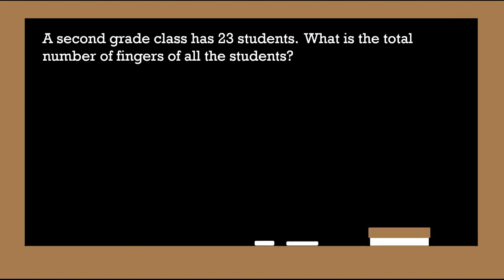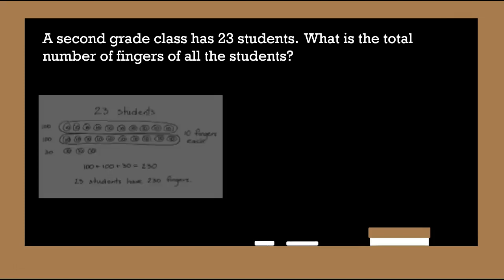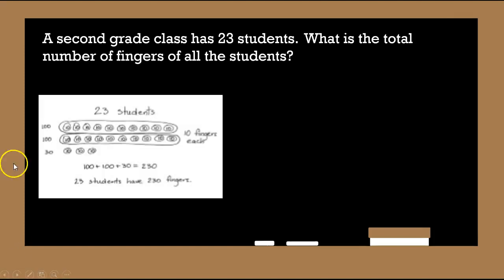Okay, so this is how I solved it. Let's compare answers. There are twenty-three students and I know there are ten fingers for each student. So I drew out twenty-three tens. Let's count here.